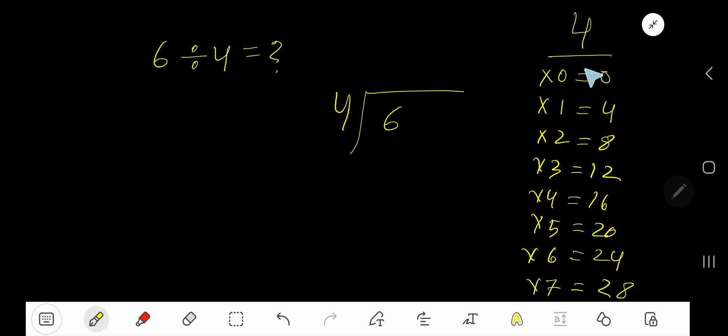To find out the multiplication table of 4, just add 4 to the previous step. 0 plus 4 is 4, 4 plus 4 is 8, 8 plus 4 is 12, 12 plus 4 is 16, 16 plus 4 is 20, 20 plus 4 is 24. This process will continue.